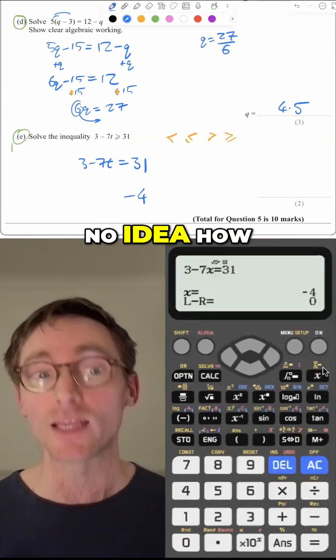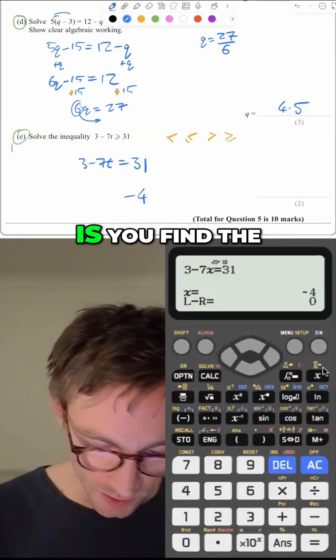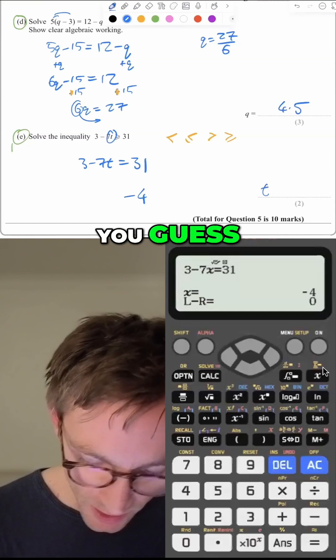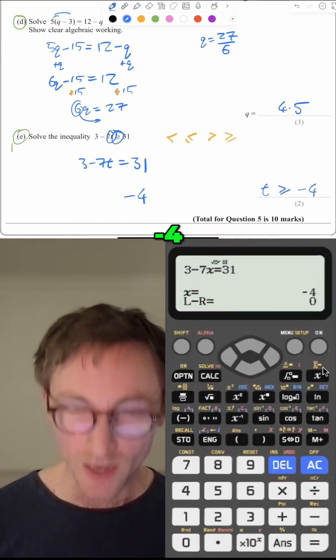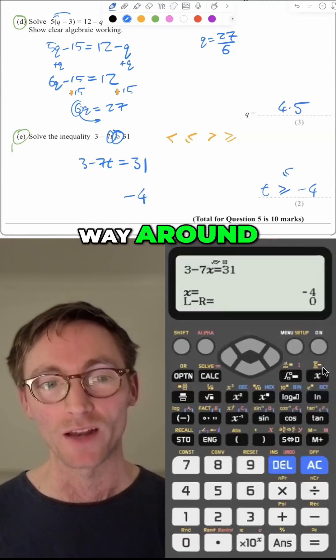So if you have no idea how to do inequalities, what I would say is you find the letter there, you guess what the symbol is. It's usually the same way around as it is there, and then put minus 4. In this case, you would have lost a mark because this was flipped the other way around.